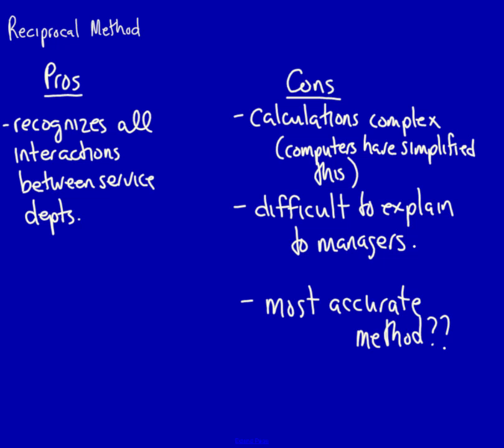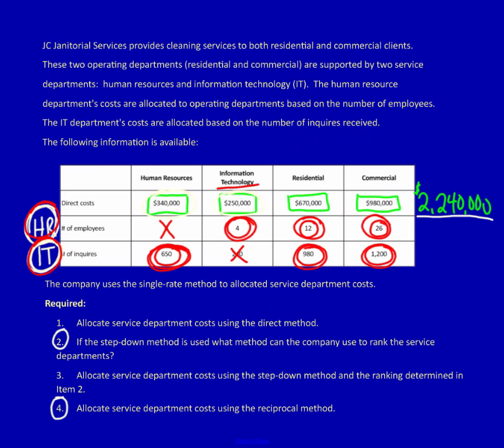But we're using cost drivers to allocate service department costs. That is still just an allocation, an estimate. If the drivers that we're using, in this case, number of employees and number of inquiries, do not reflect the majority of the costs within the department, then no method, even if it does recognize the interaction between the service departments, will produce an accurate allocation.